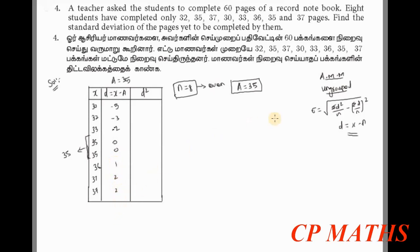Now for the formula, we need summation of d square. So d squared: 5 square is 25, 3 square is 9, 2 square is 4, 0, 0, 1, 4, 4. The table columns are now filled.